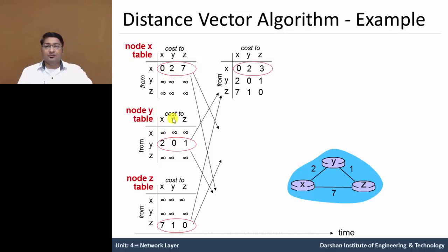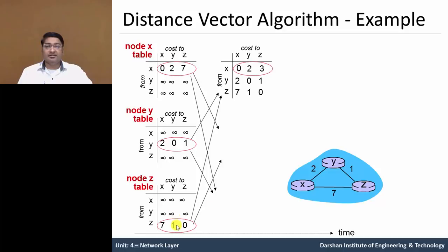For node Y's table, the first row is infinity. Node y to x is infinity, y to y is zero, y to z is 1. The rest of the fields for z are infinity. For node Z's table: z to x is 7, z to y is 1, z to z is 0.